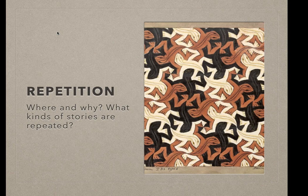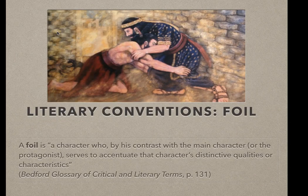Another feature of Gilgamesh is repetition. Look for places where the same scene plays out several times in much the same way — why does the author do this? The character Enkidu, a kind of wild man in the epic, is acting as a foil to Gilgamesh, meaning his narrative purpose, at least in part, is to create a contrast with the protagonist. This contrast makes the protagonist's — the main character's — qualities and characteristics stand out more prominently.